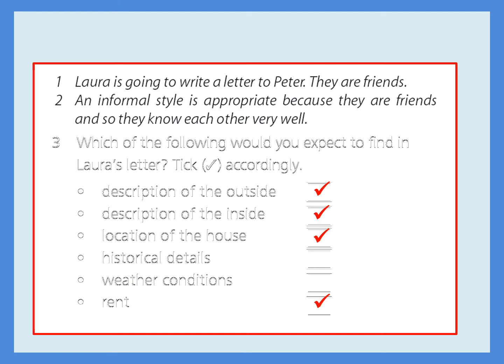And third, which of the following would you expect to find in Laura's letter? First, description of the house outside. Then, the description of the house inside. Then, the location of the house. And finally, the rent — how much does it cost to rent the house? Did you get that correctly? I hope everybody did.